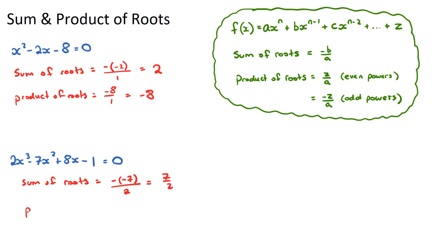And the product of the roots. Now, this one, the largest power was odd, as it was a cubic function, so we would need to do negative, our constant term, over our coefficient of x cubed. So it'll be negative negative 1 over 2, which would be positive 1 half.